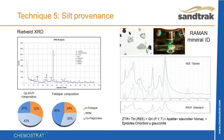Our SandTrack team also offers a unique silt provenance service that utilises high-resolution XRD analysis and Raman spectroscopy for the characterisation of silt mineralogy, focusing on, for example, feldspar, mica and heavy mineral populations. The ability to model both the provenance of sands and silts ensures that SandTrack can, for the first time, model a sediment dispersal pattern of the entire depositional system.